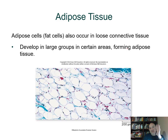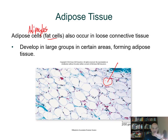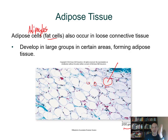If a loose connective tissue contains many adipocytes, we call it adipose tissue. Adipocytes (fat cells) store fat as an energy source and provide insulation to help prevent heat loss. They can also cushion organs like the kidney. Each adipocyte has such a large fat droplet stored within it that the cytoplasm is pushed to the side and the nucleus is barely visible at the edge.